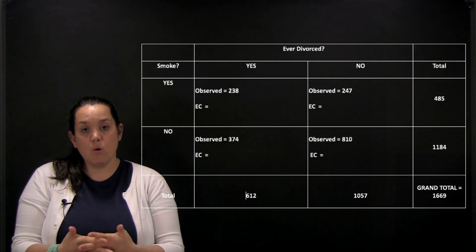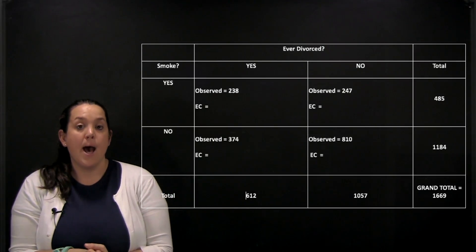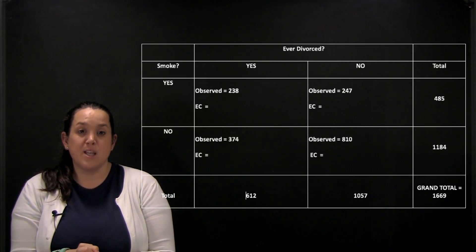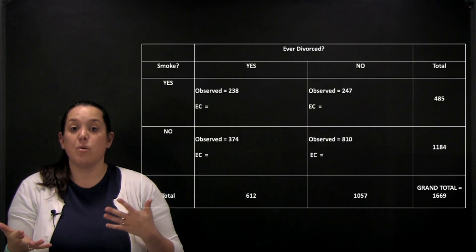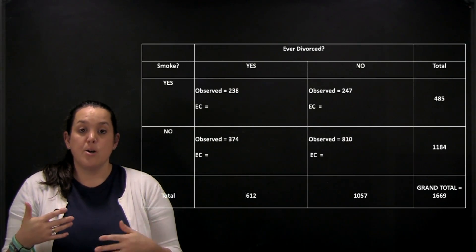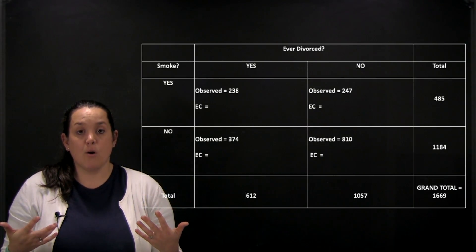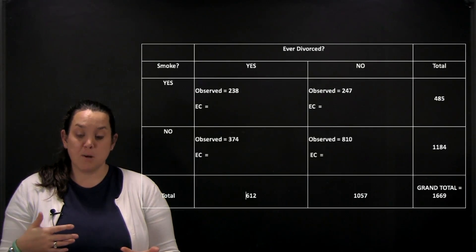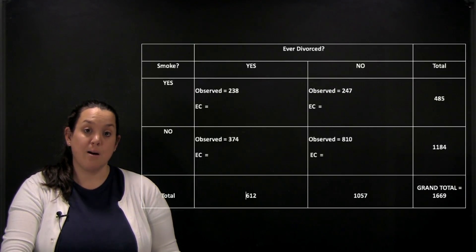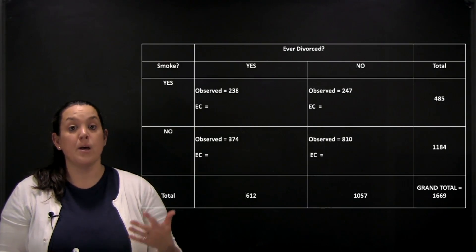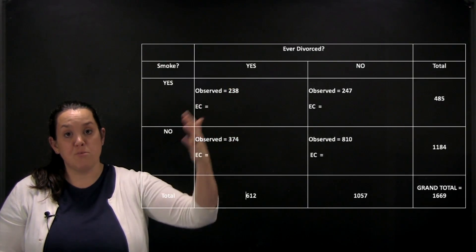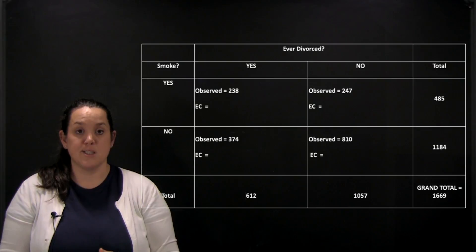So right now we are going to start looking at how to calculate values that we would expect to see if two variables were not related. So those values are going to be called expected counts. An expected count by definition calculates what we would expect to see if there was no relationship between the two variables on the contingency table.